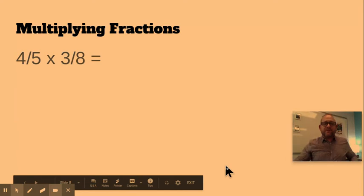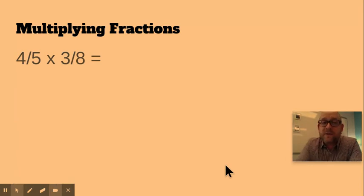All right. So let's try one together. You have four fifths times three eighths. Go ahead and work that on a piece of paper real quick or do this in your head. You should be able to work this out pretty quickly.